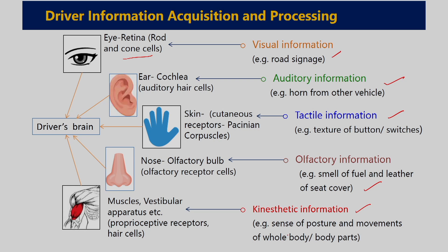Kinaesthetic information — senses of posture, movements of the whole body or individual body parts — is perceived by various types of receptors located in muscles and in the vestibular organ of the inner ear. There are proprioceptive receptors in muscles and hair cells in the vestibular apparatus. These receptor cells, when activated, send signals to the brain, and then the brain interprets the signals to take decisions. The driver receives so much information from various sensory channels, and while it reaches the driver's brain, they get perception about the stimuli for decision making.